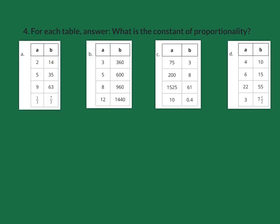Each table, what is the constant of proportionality? They're telling us that they are all proportional relationships. The constant of proportionality tells us what to multiply by. 2 times what equals 14? That's 7. 5 times 7 equals 35. 9 times 7 is 63. And 1 third times that 7 is 7 thirds. So, the constant of proportionality for this one is 7.